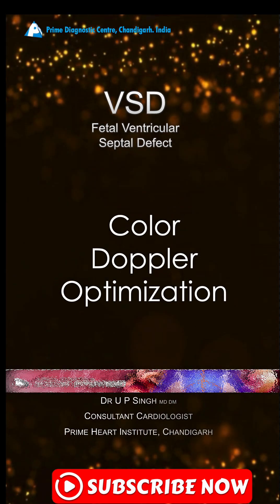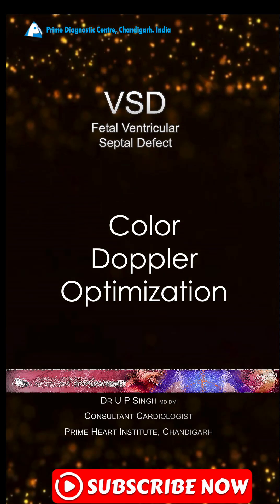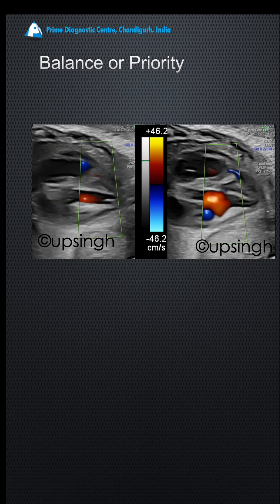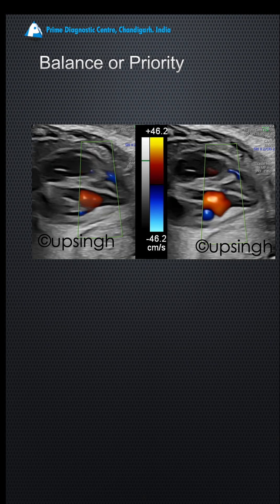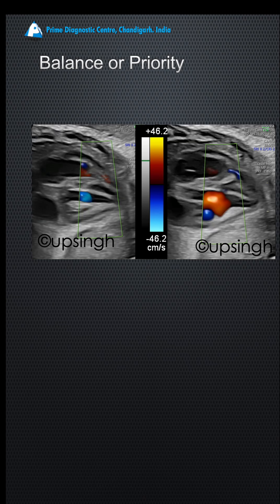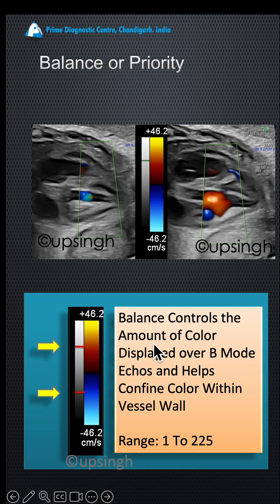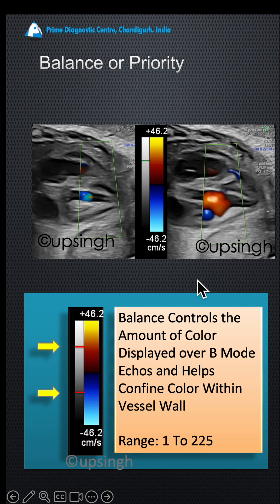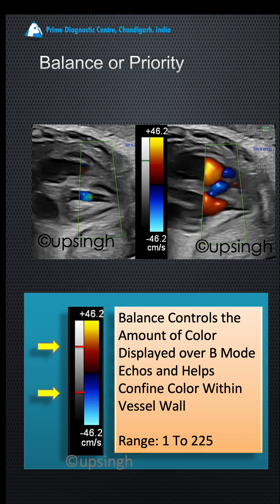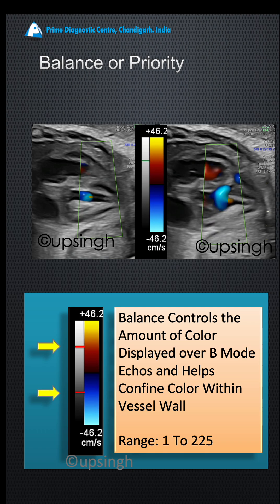Let's discuss how to optimize color Doppler to visualize a VSD. In this panel, you see 2D information and color Doppler, but the 2D information is dominating the VSD, so you don't see any VSD flow here. If your machine has a setting called 'balance,' you can give priority to either color Doppler or 2D — give priority to color Doppler over the 2D information.